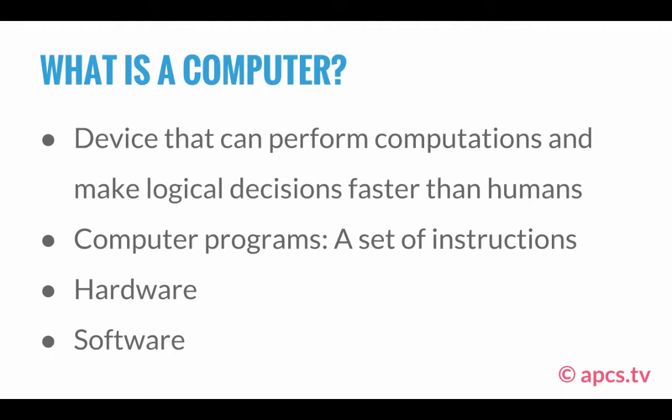There are two components to a computer, hardware and software. The computer programs or set of instructions that run on the computer are referred to as software. Hardware are the various devices that the computer is made up of, such as the keyboard, screen, mouse, etc.